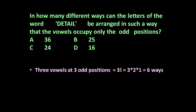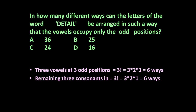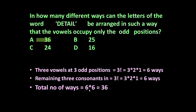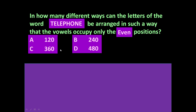Three vowels at three odd positions can be arranged in factorial three ways, which equals six ways. Now the remaining three consonants — D, T, L — can be arranged in factorial three ways, which is three into two into one, equal to six ways. So the total number of ways is six into six, which equals 36. The answer is 36.